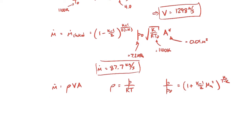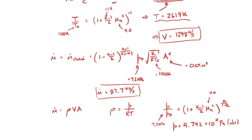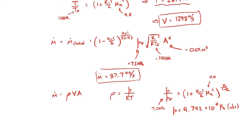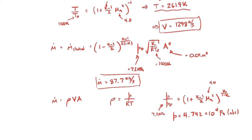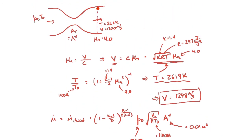To find the pressure where the Mach number is 4, I use the isentropic stagnation pressure ratio expression. That comes out to be 4.742 × 10⁴ pascals absolute. The stagnation pressure was 7.2 megapascals and the Mach number is 4. Now I have the pressure, and I already found the temperature earlier. The velocity was already calculated as well.